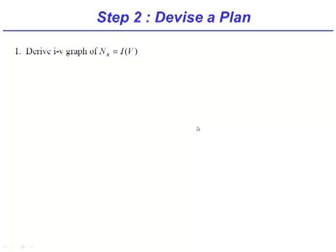We will first derive the IV graph using the op-amp rules, like Amir correctly pointed out. Next, we will impose the dynamic constraint from the capacitor.